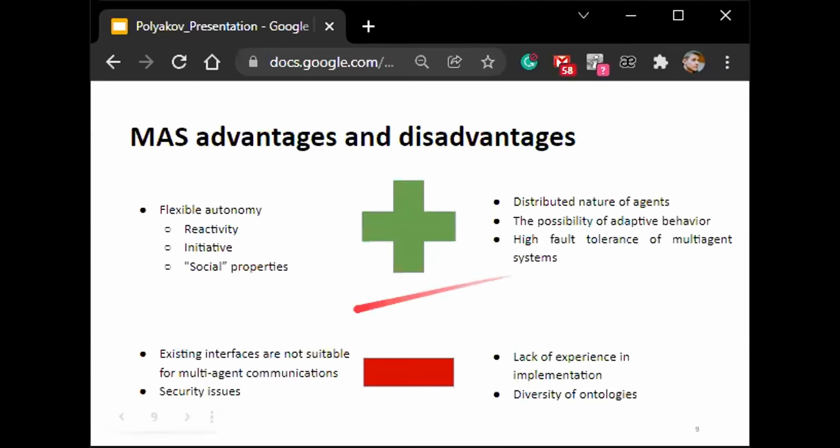But the downsides are such as existing interfaces developed by modern power systems are not suitable for multi-agent communications, since they require much richer communication language. There are also security issues because agents are vulnerable to such attacks as sender substitution or message substitution. There is also a lack of experience in actual implementation of multi-agent systems for power control. And also, as different developers develop different ontologies for multi-agent systems communications, different systems use different ontologies in different communication languages.